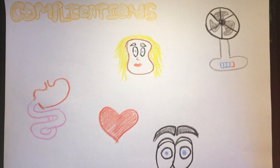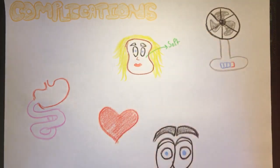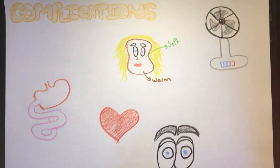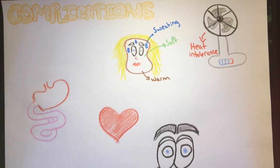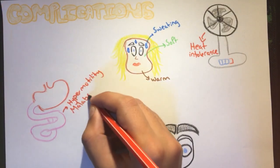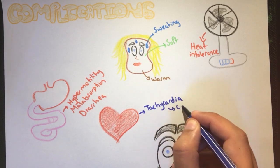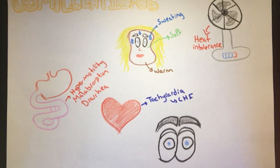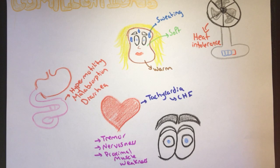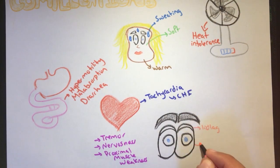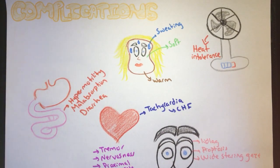The complications of hyperthyroidism are many. Constitutional symptoms include soft, warm skin, heat intolerance, sweating, and weight loss despite increased appetite. Stimulation of the gut results in hypermotility with diarrhea and malabsorption. Patients also present with tachycardia, which may lead to congestive heart failure. Additional symptoms include tremor, nervousness, and proximal muscle weakness. Eye findings include lid lag, a wide staring gaze, and, in Graves disease, proptosis.